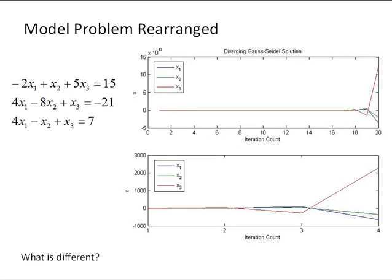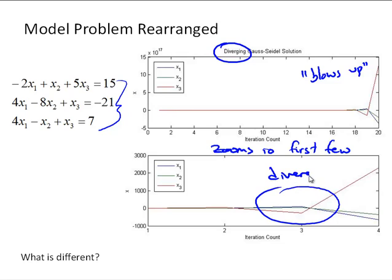So let's look at another case. Here I'm just going to take that same model problem, and I've rearranged it. The equations now are in a different order. And what we see is now, again, starting with initial guess of x equals 0, the solution basically blows up. It's a diverging solution, and you can see that that happens right away. This second figure zooms in on the first few iterations. And you see, even by the second iteration, things are starting to diverge. And we're not getting to those final solutions. So here we see that the Gauss-Seidel method can diverge.